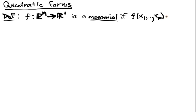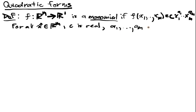has the form with some constant C times X1 to the a1 power all the way up to Xn to the an power, multiplying all these together. This holds for all X in R^M where C is real and a1 up to am are non-negative integers.